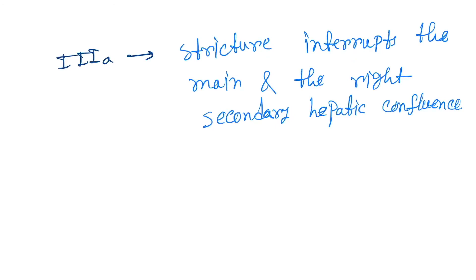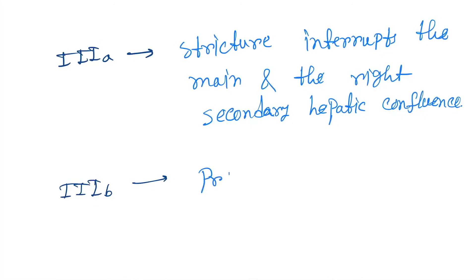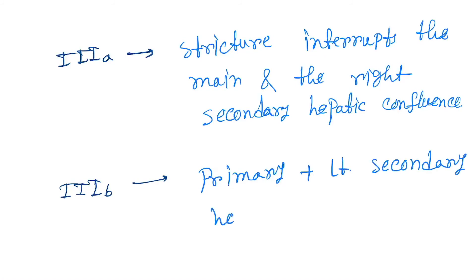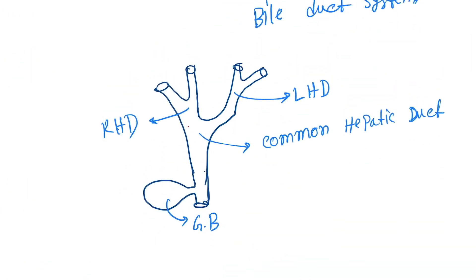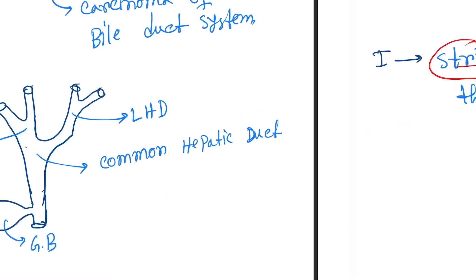Category 3b: the stricture involves the primary hepatic confluence plus the left secondary hepatic confluence. So it is involving the primary confluence and also the secondary confluence on the left side.